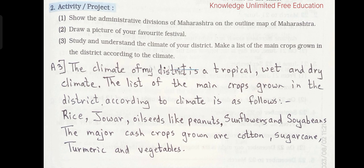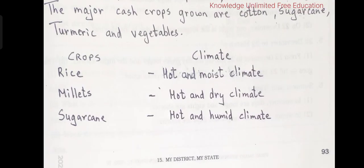Now we will see crops according to the climate. The first crop is rice — it needs a hot and moist climate. Second one is millet — it needs a hot and dry climate. Third one is sugar cane — it needs a hot and humid climate.